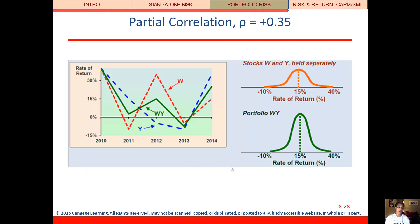If the stocks are somewhere between perfectly positively correlated and no correlation at all — which would be a correlation of zero — it would look something like this. We've got W and Y, and together the W-Y portfolio is somewhere in the middle.